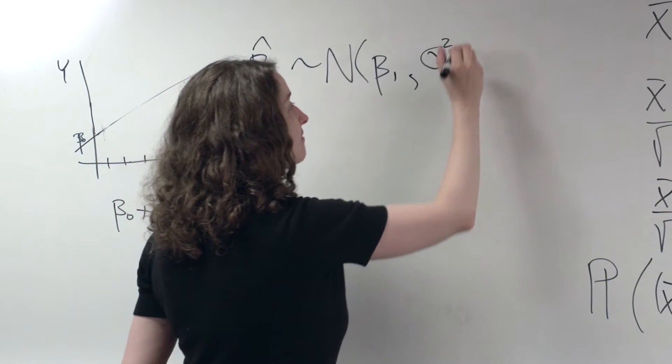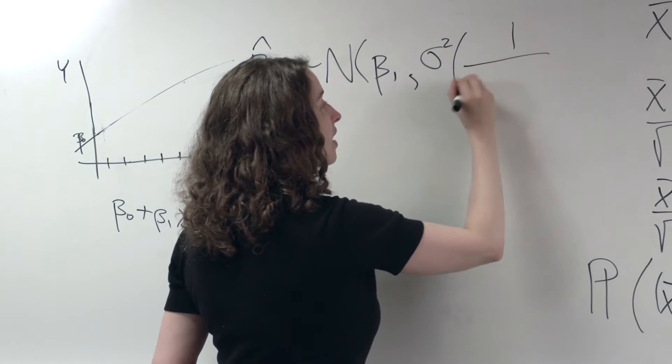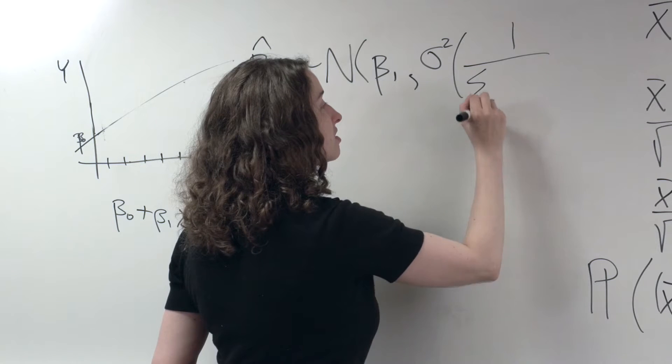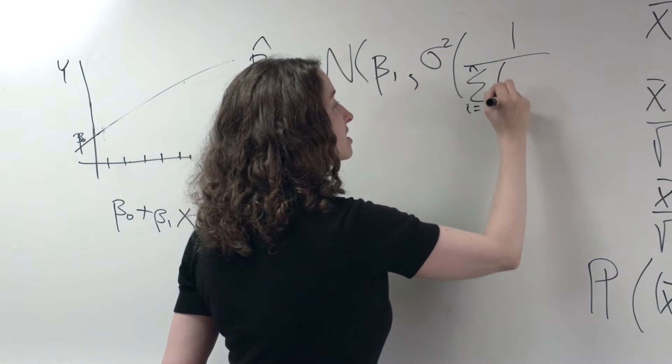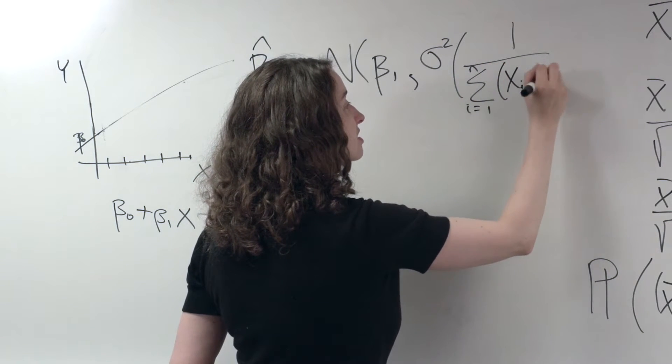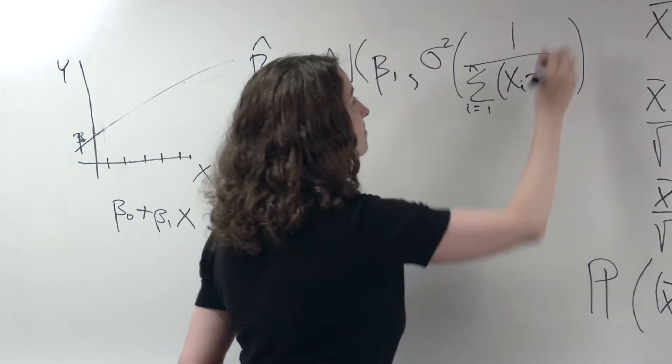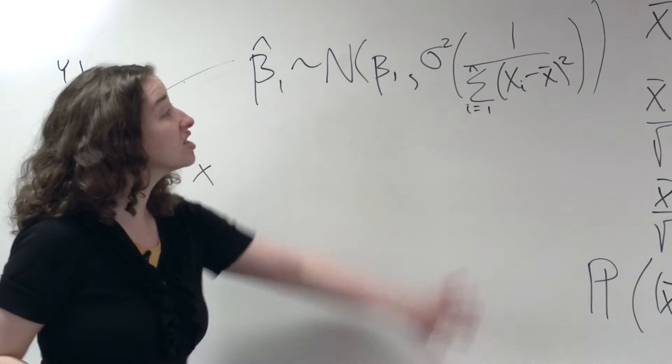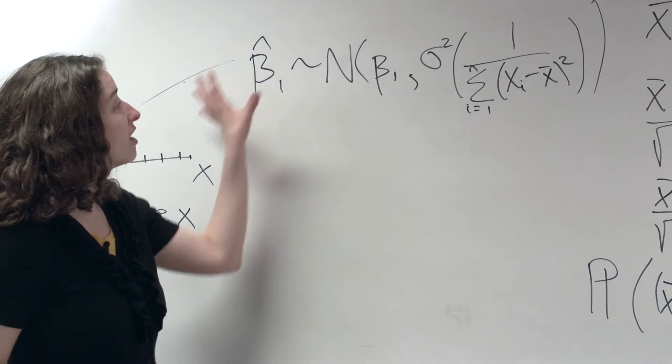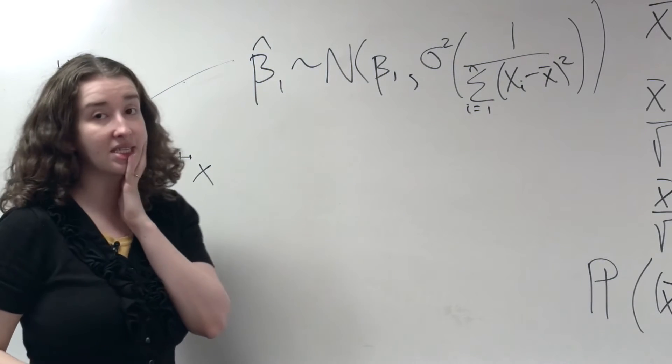Turns out that variance is going to be sigma squared times 1 over the sum of squared differences in x. So before we talk about this quantity too much, I want you to just see what we have here, see what this says.